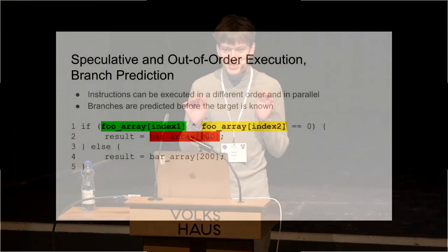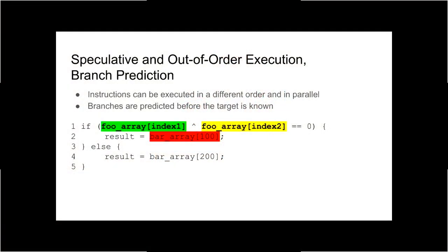What is speculative execution, out-of-order execution, branch prediction, pipelining? The processor can execute instructions in parallel and even in a different order than they appear in the machine code, and the processor can also predict branches before the target of a branch is known.